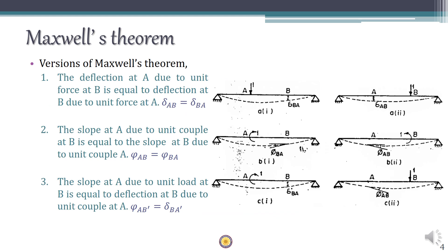The first variation: the deflection at B due to a unit force applied at A, delta_AB, should be equal to the deflection at A due to a unit load applied at B. This is similar to the previous statement, only replacing the force with a unit load. The second variation is that the rotation at B due to a unit moment applied at A will be equal to the rotation at A due to a unit moment applied at B.